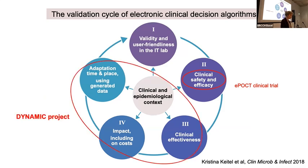At the end, the algorithm gives a recommendation regarding treatment — antibiotic or not — and referral. This is not the end of the story, because exactly like for vaccines, we have to validate digital tools through phases: phase one is all work done in the IT lab to make it work; phase two is a clinical safety and efficacy trial in controlled conditions with individualized randomization. Then we move to the DYNAMIC project, which focuses on effectiveness, impact, costs, how to adapt the algorithm with the data, and how to account for the clinical and epidemiological context.